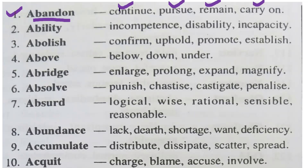Suppose the question comes in the examination — the word given is 'abandon' and it asks for the antonym as a multiple choice question. If 'continue' is one of the options, you tick 'continue.' If 'pursue' is given, you tick 'pursue.' If neither continue nor pursue is there, then you tick 'remain' or 'carry on.' Likewise for similar questions.